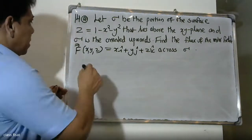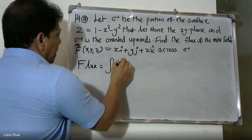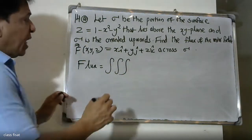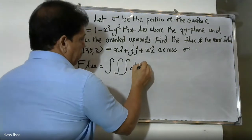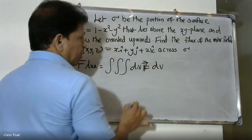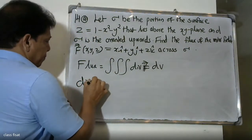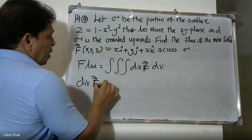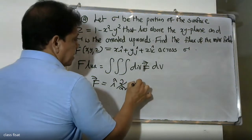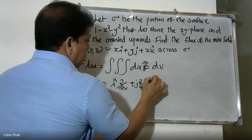The flux is equal to the triple integral of divergence of F dV. This is an important result. The divergence operator is: del F = i (d/dx) + j (d/dy) + k (d/dz).